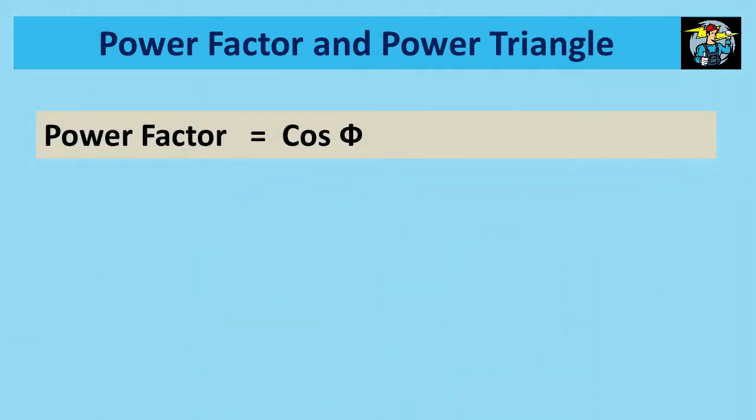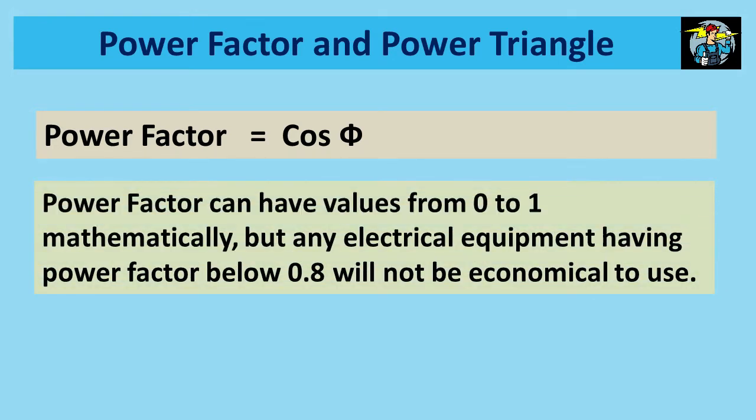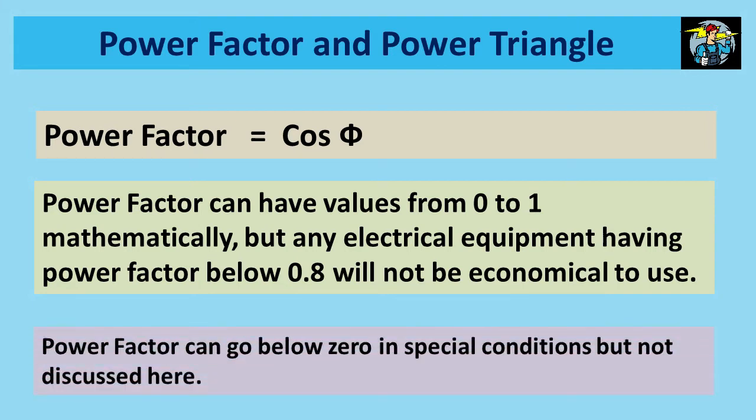Power factor is also called cos phi and you will have seen this on name plates of induction motors, generators, or on any other relevant electrical equipment. Power factor can have values from 0 to 1 mathematically, but any electrical equipment having power factor below 0.8 will not be economical to use. Power factor can go below 0 in special conditions, but not discussed here.